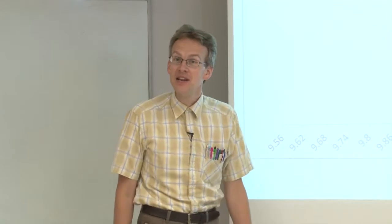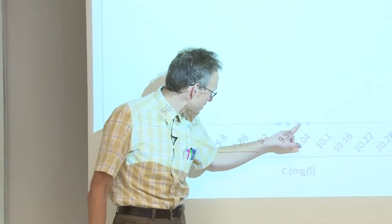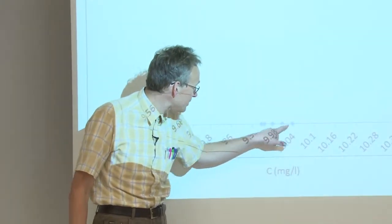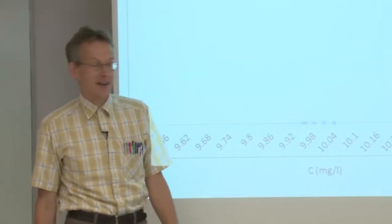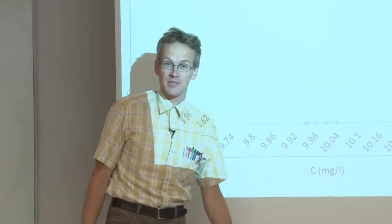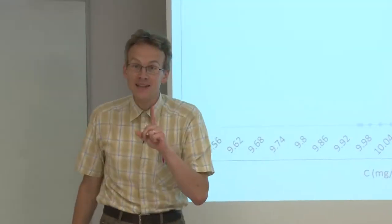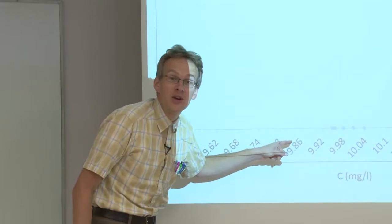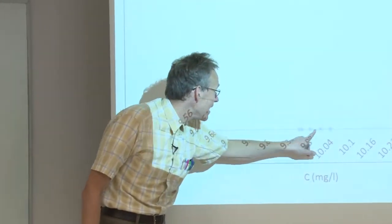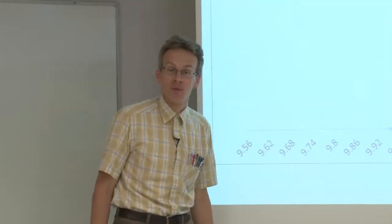These values are affected both by random and by systematic effects. The random effect causes the differences between these values. They do not agree among themselves. But the systematic effect we don't see from here because all those values are shifted from each other.